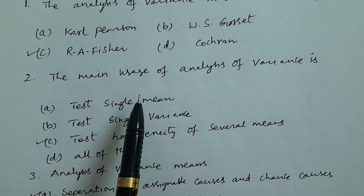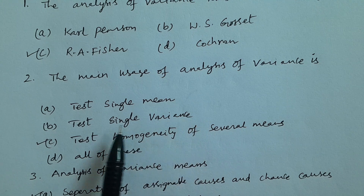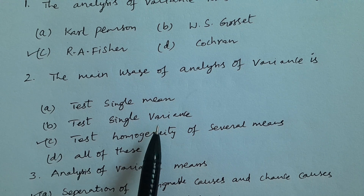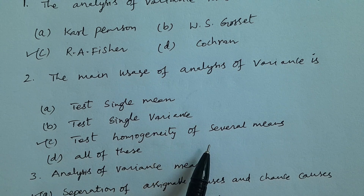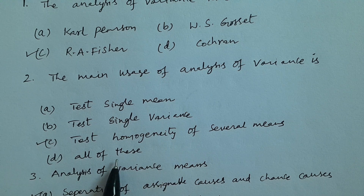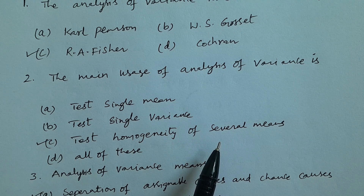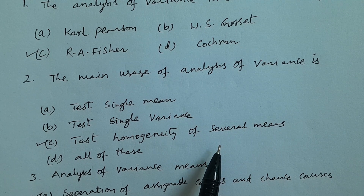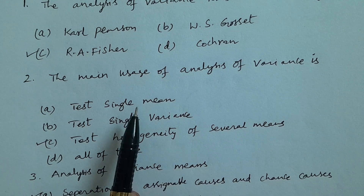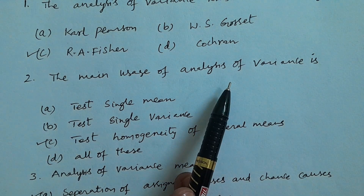In Telugu: The main usage of Analysis of Variance — options are Test for Single Mean, Test for Single Variance, Test for Homogeneity of Several Means, and All of These. The answer is C — Test for Homogeneity of Several Means. That is, various samples from various populations and their means are tested using Analysis of Variance. Single mean, single variance, and two means use different tests, but homogeneity of several means is tested using Analysis of Variance.